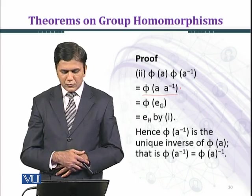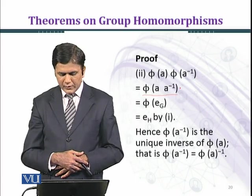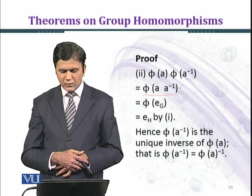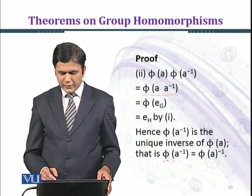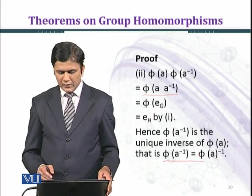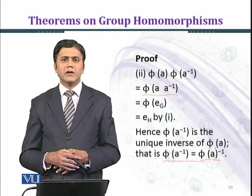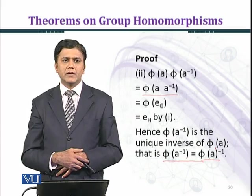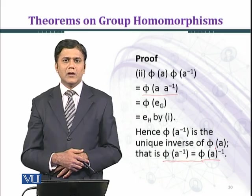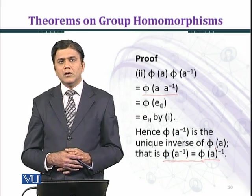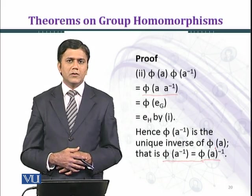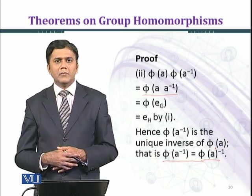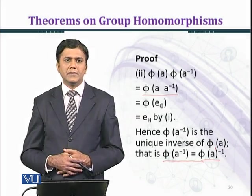Hence, you can see that phi(A inverse) is the unique inverse of phi(A), and we can write it as phi(A inverse) equals phi(A) inverse. Here phi(A) is the image of A and is an element in group H. Under morphism, the identity element and inverses are preserved. So we have proved this property. Thank you.